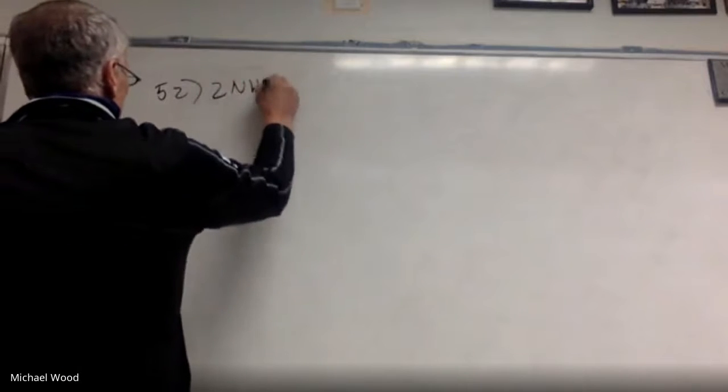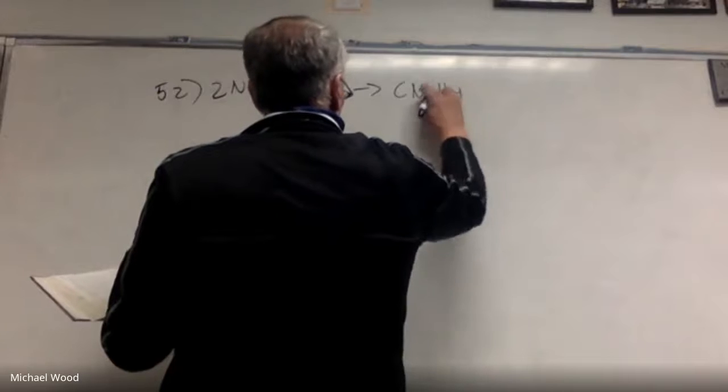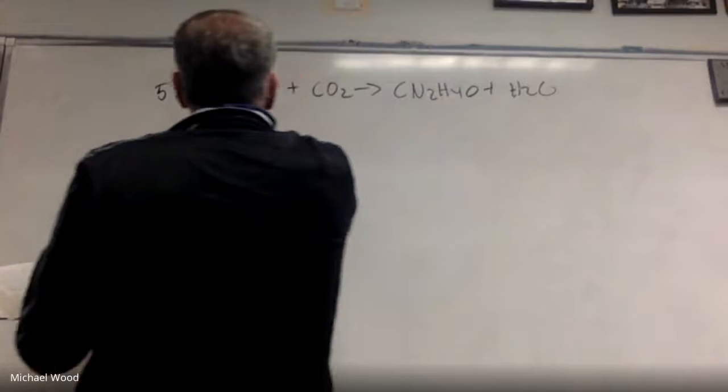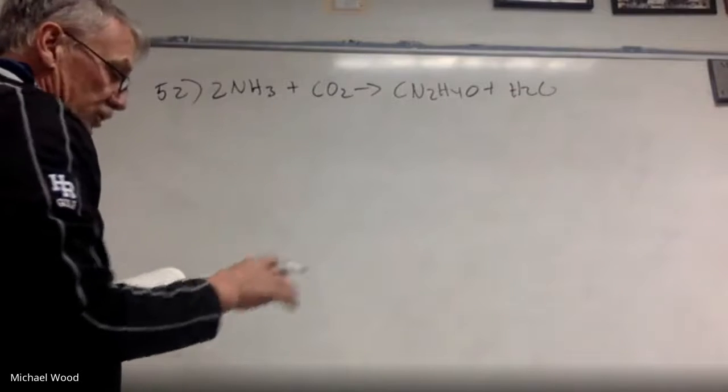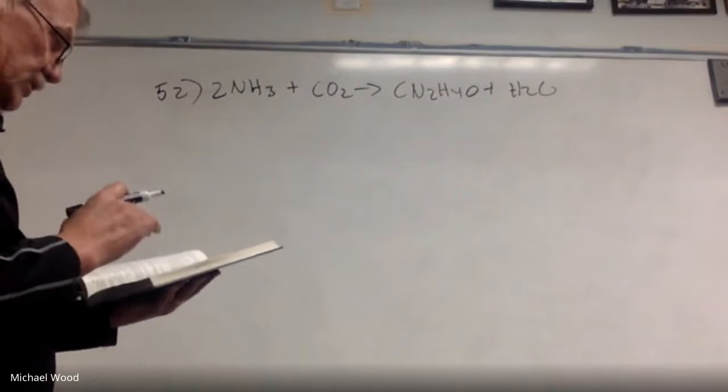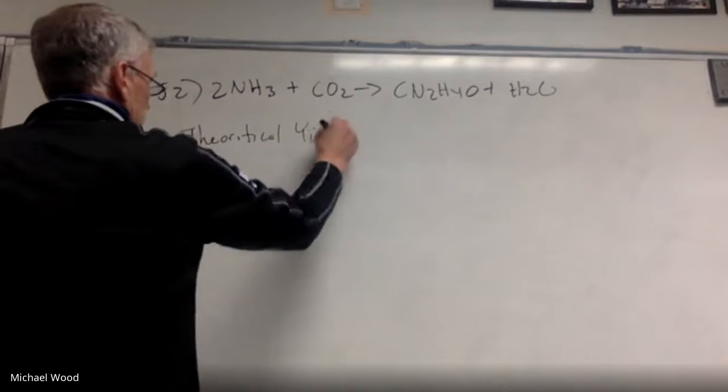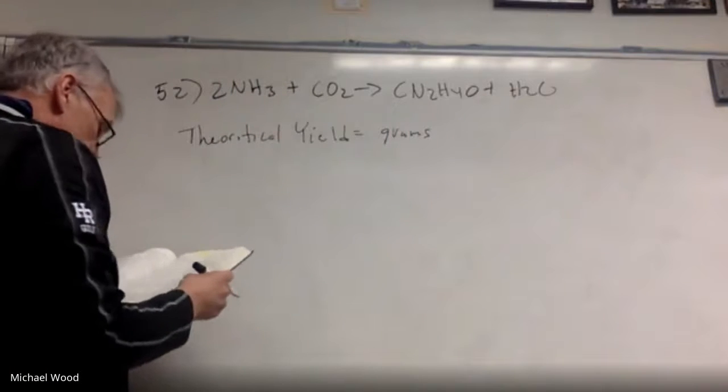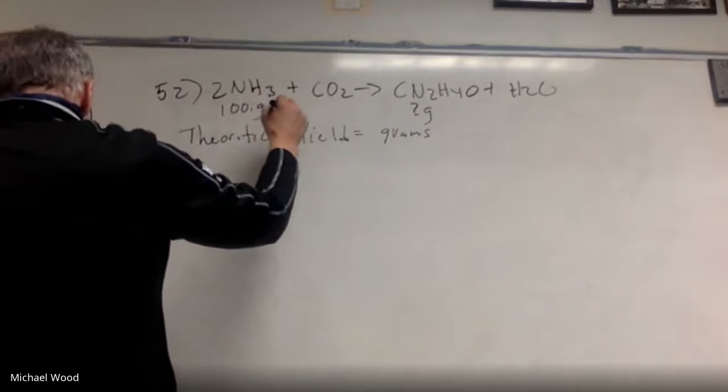I'm going to do problem 52 in the book. So this is the reaction we've got. In this chapter, you always want to make sure that the equation is balanced. This is on page 287. What is the theoretical yield? In class today, I think Lauren asked this - this means grams. So theoretical yield means grams of urea. So we're trying to find grams of this. And here we have 100 grams of ammonia and we have 100 grams of carbon dioxide.